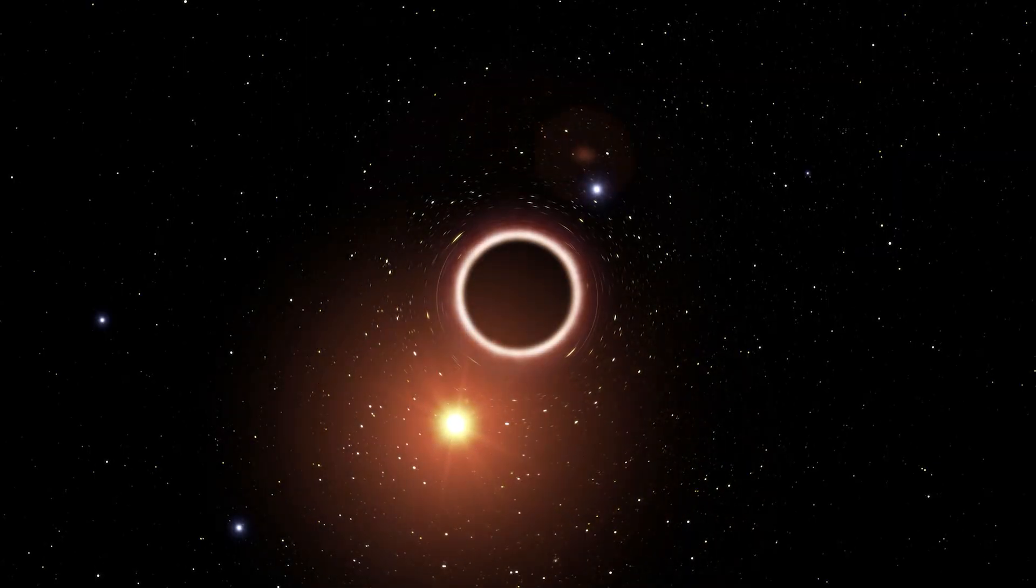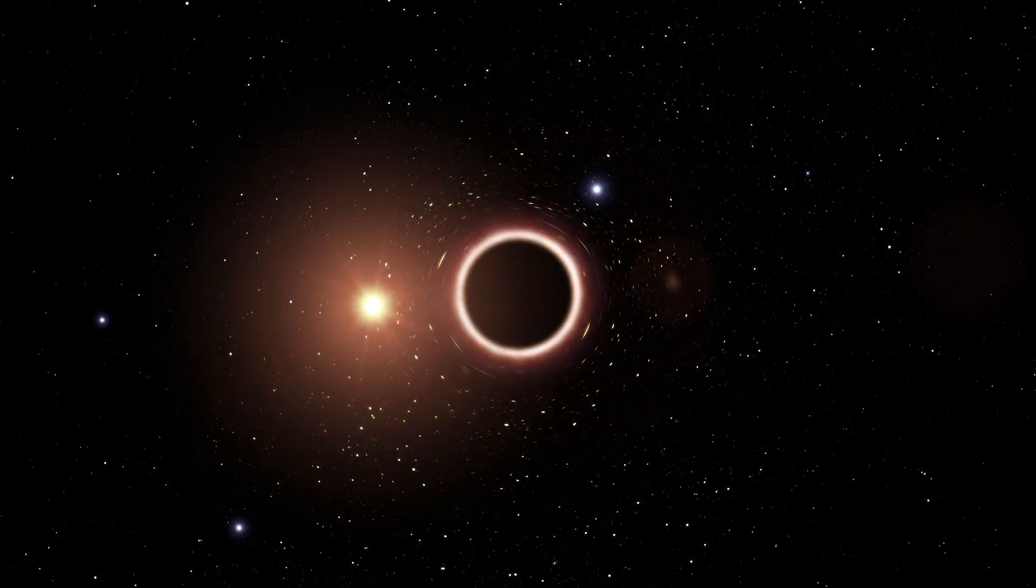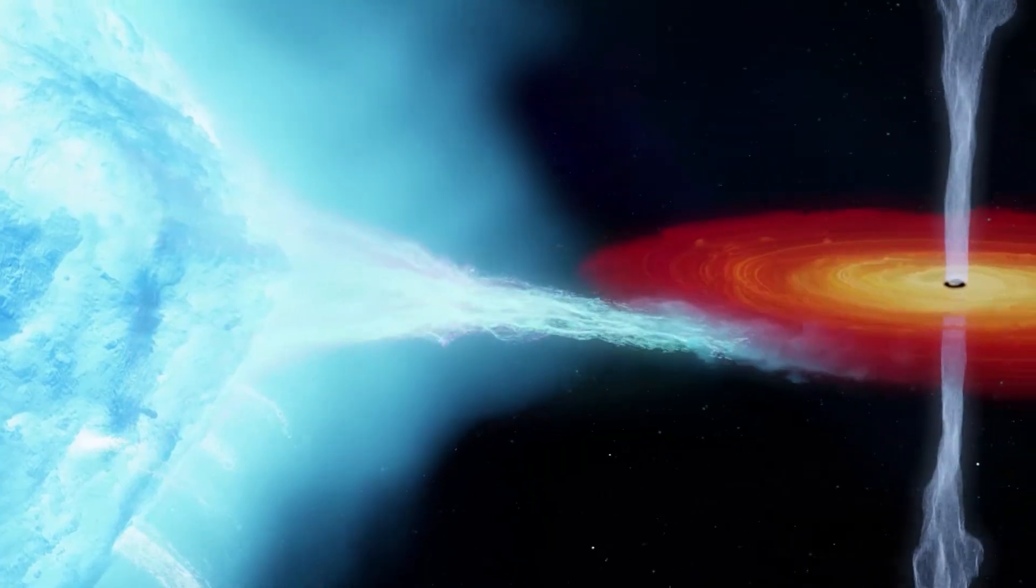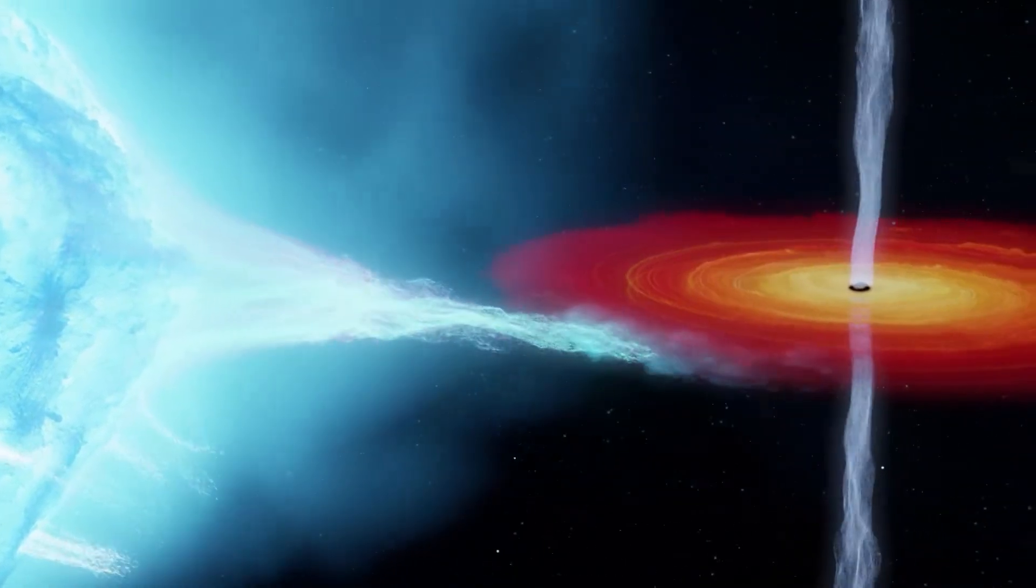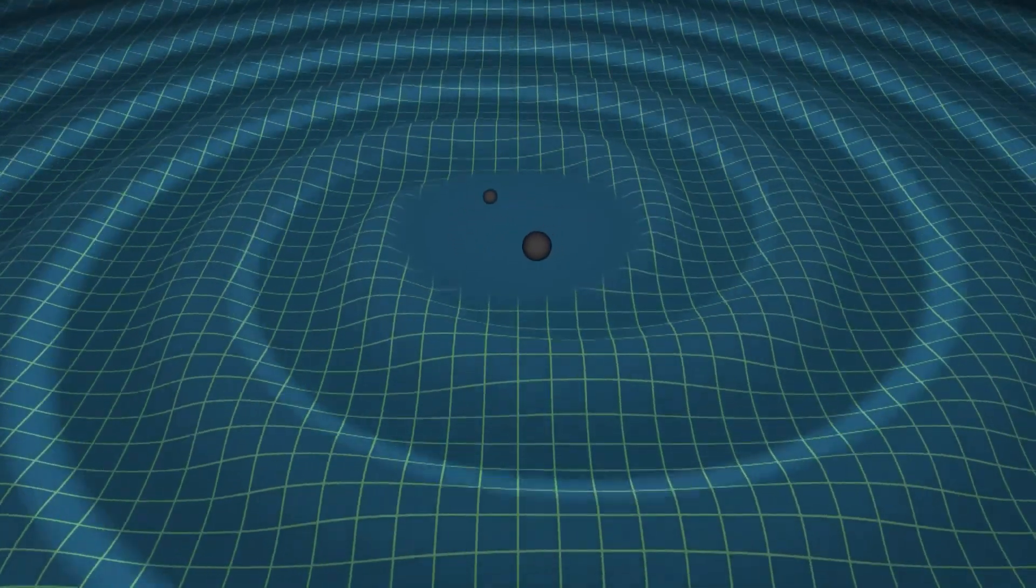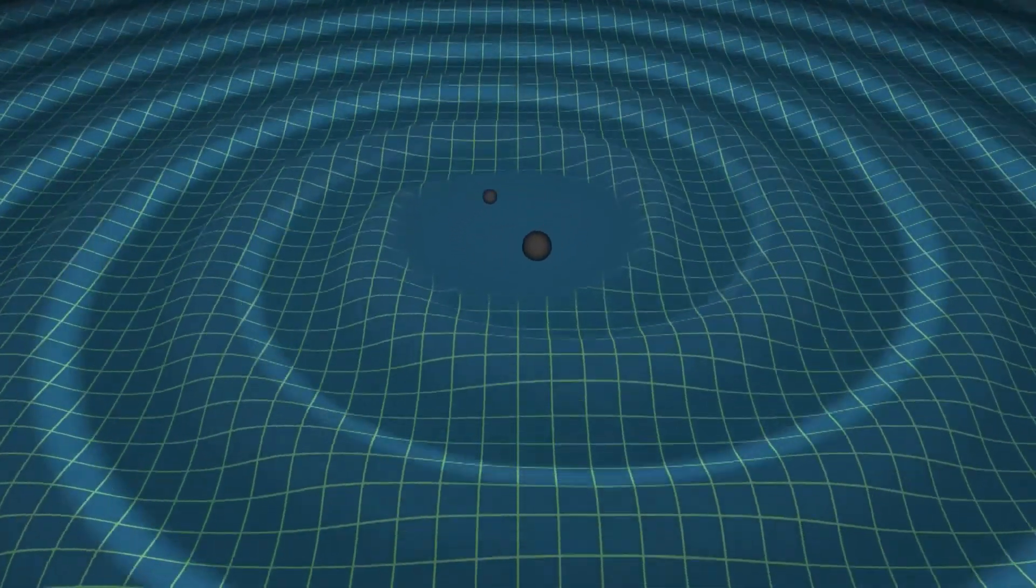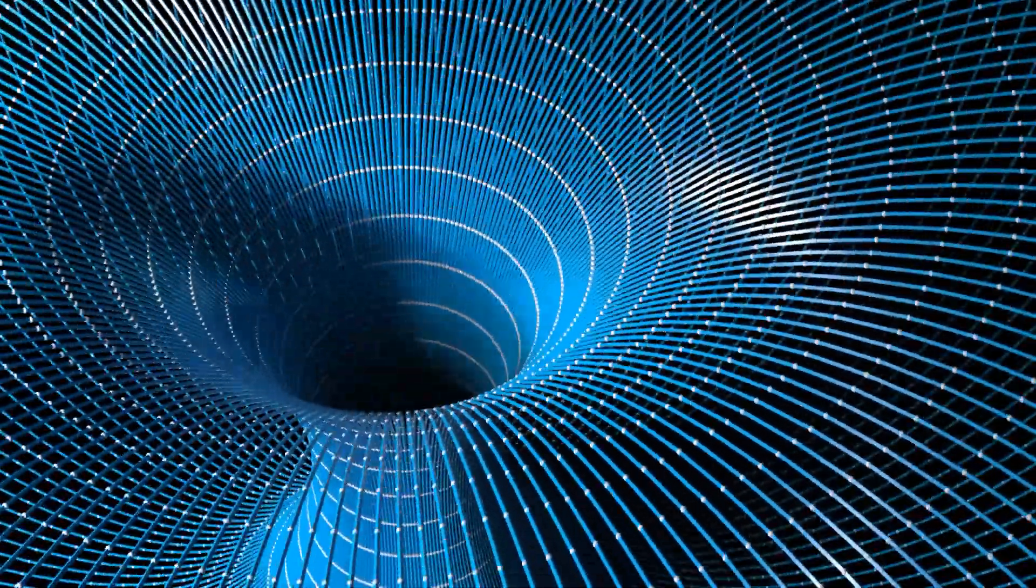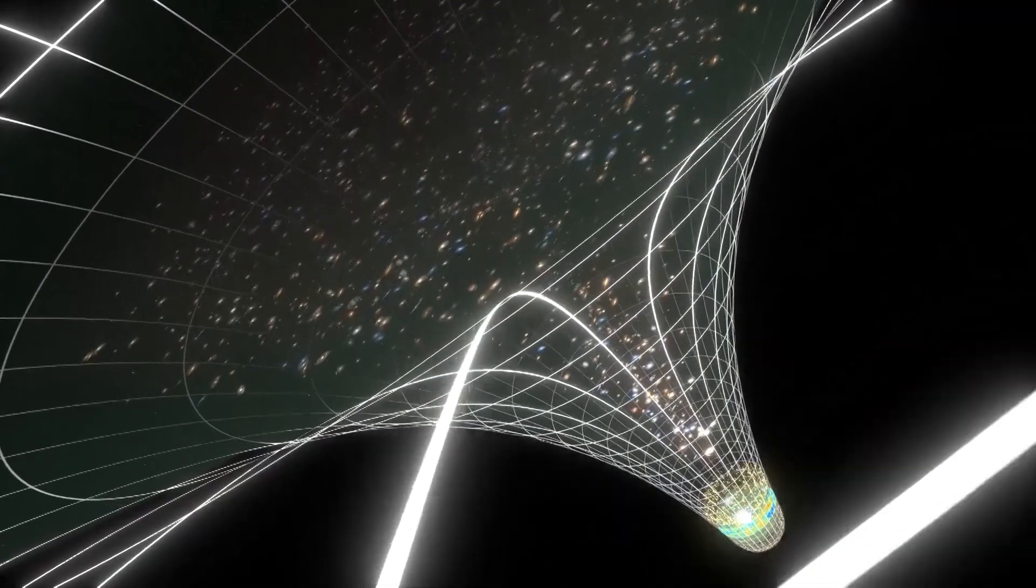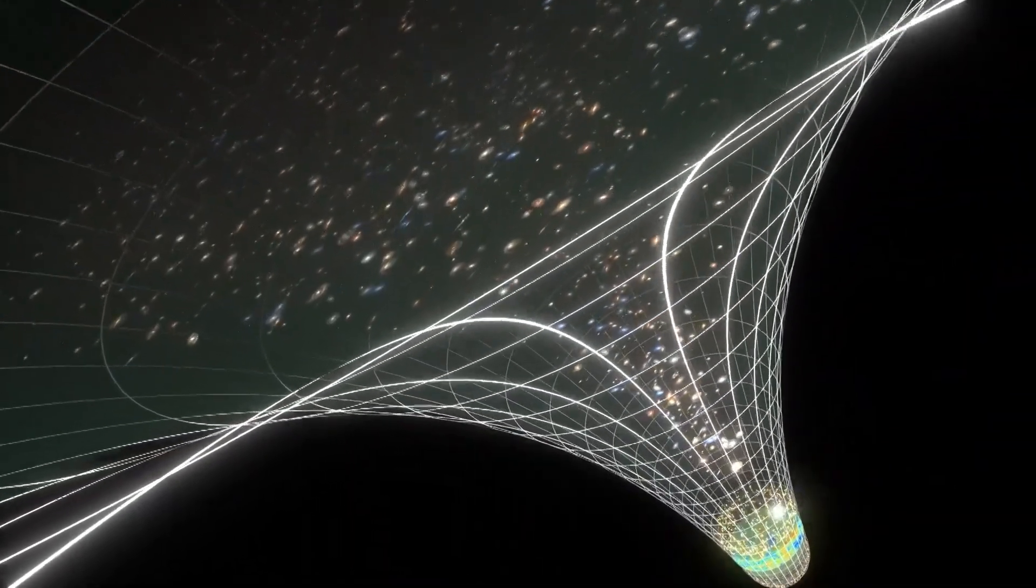A singularity, observed in black holes, represents an infinitely dense point where the laws of physics break down. Black holes, formed from collapsed massive stars, possess a singularity at their core, enclosed by an event horizon beyond which nothing escapes. The singularity's mystery arises from the clash between general relativity and quantum mechanics as both theories fail to explain its behavior. This highlights the need for a unified theory of quantum gravity.